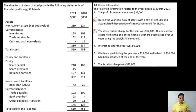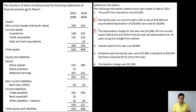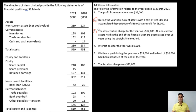Under current assets, inventories and trade receivables have both changed — we will analyze these when looking at working capital in the cash flow from operating activities. Cash and cash equivalents: last year's was 14,000 and this year's is zero.